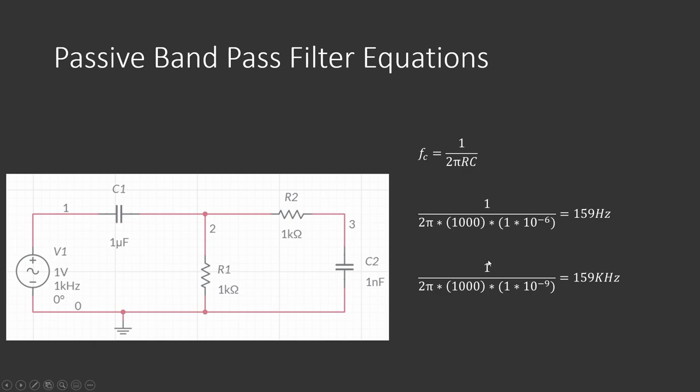And then our low-pass cutoff frequency is 1 divided by 2π times 1000, or 1k ohms, times 1 times 10 to the minus 9, or 1 nanofarad, giving us 159 kilohertz.